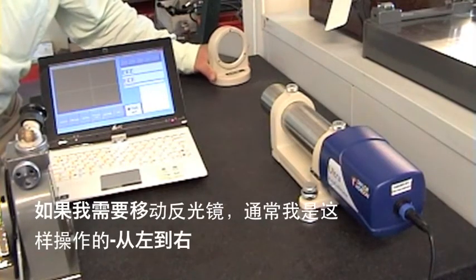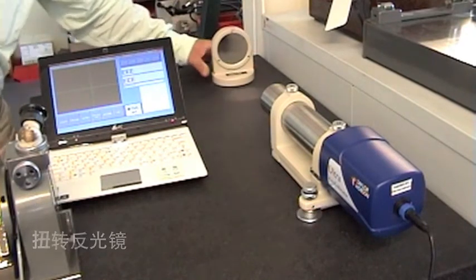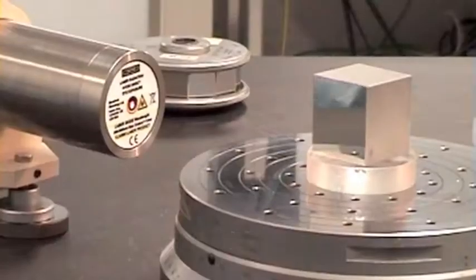How I normally do this is if I move the mirror, if I twist the mirror left to right, we should only have one axis on the autocollimator moving. The second axis should remain stationary.